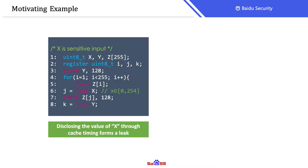On the left side, we have a simple program which has several variables, a for-loop, two memory load instructions, and three memory store instructions. X is the secret input, and disclosing the value of X by the cache timing will cause a leak. Here we also assume that I, J, K are register variables, and accessing them needs no memory visit.